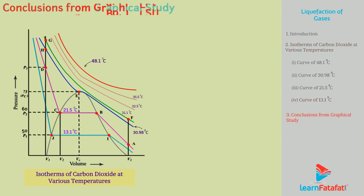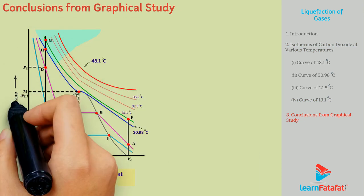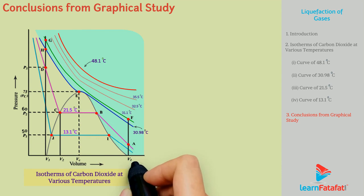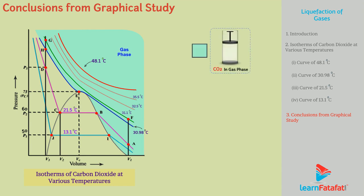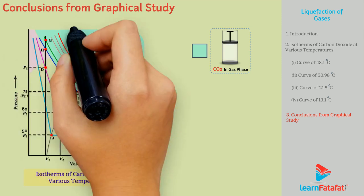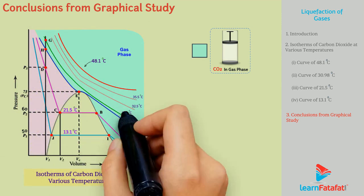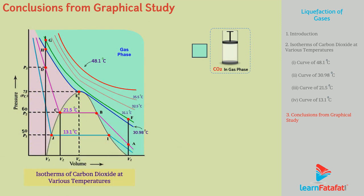Conclusions from Graphical Study: In the region to the right of dome-shaped curve and to the right of 30.98 degree Celsius isotherm, carbon dioxide is in gas phase. However, to the left of dome-shaped curve and left of 30.98 degree Celsius isotherm, carbon dioxide is in liquid phase.